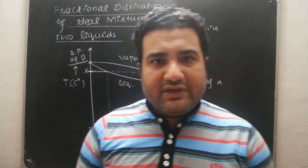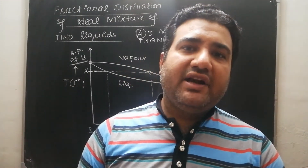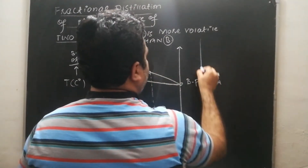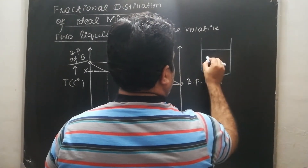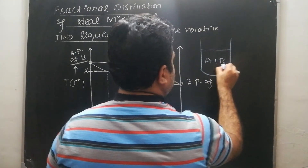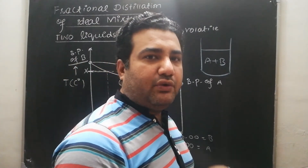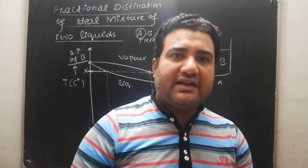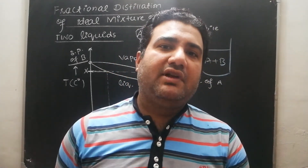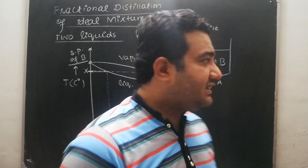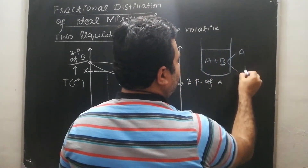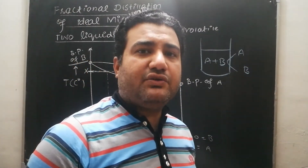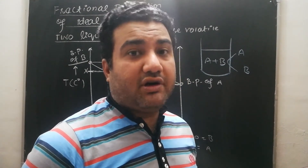We have mixed two liquids — components A and B, both liquids — to form an ideal solution. Now these liquids are mixed and we want to separate them by fractional distillation. We want to recover A and B again in the pure state. Is it possible to separate them completely, or is it not possible? We are going to discuss this in this lecture.